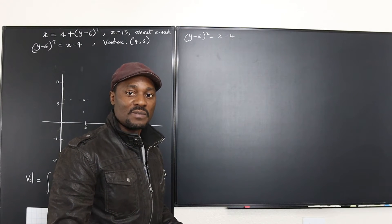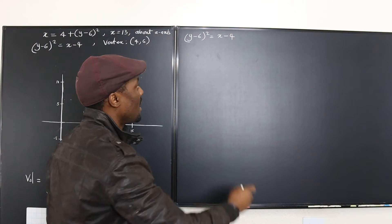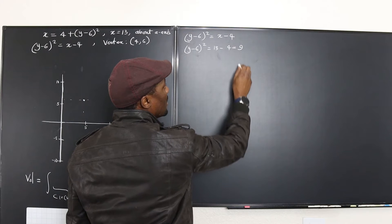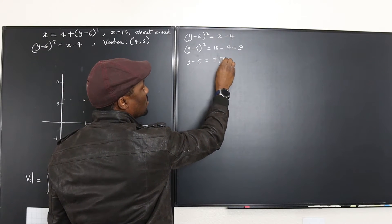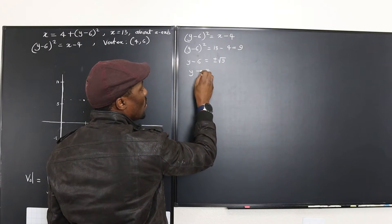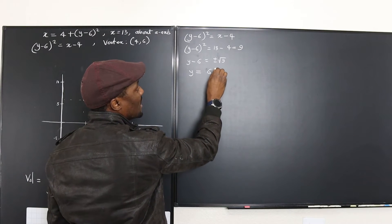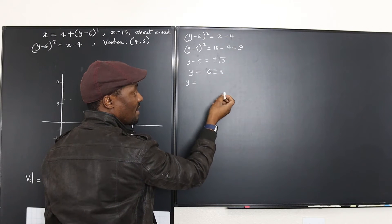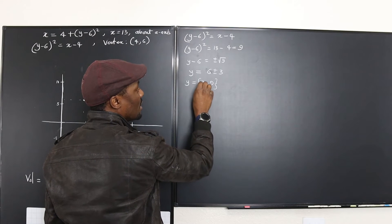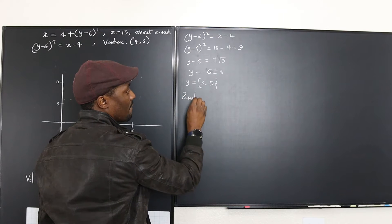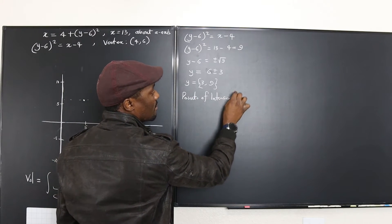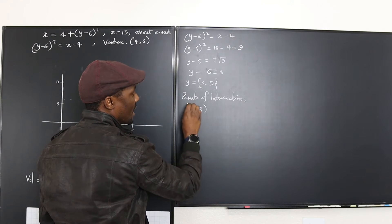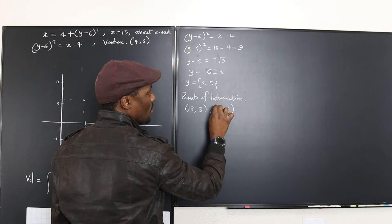We want to find what y will be when x = 13. Starting from (y − 6)² = x − 4, we substitute x = 13: (y − 6)² = 13 − 4 = 9. So y − 6 = ±√9 = ±3, giving y = 6 ± 3. Therefore y = 9 or y = 3. The points of intersection are (13, 3) and (13, 9).